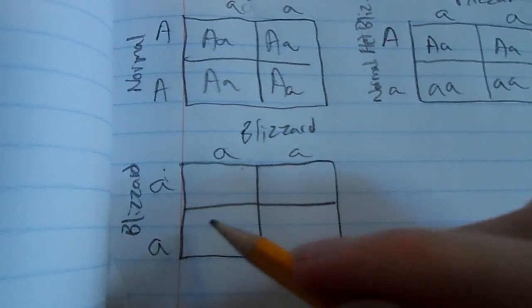So that's what you get out of there. Now down here is a blizzard to a blizzard. They're both recessive traits, so they both get little As. So you'll get 100% blizzard.